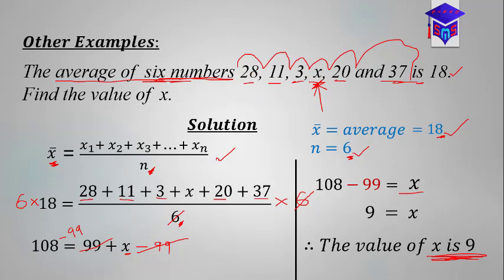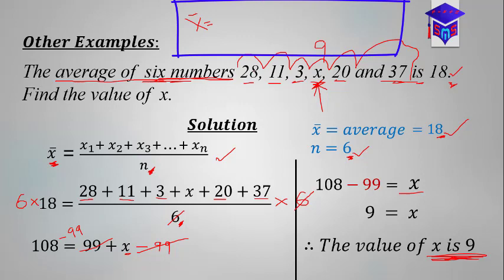To verify: if you substitute 9 back in and use the normal approach to find the mean, you should get 18. X̄ equals 28 plus 11 plus 9 plus 20 plus 37, all divided by 6. This should give us 18 — you can try that and confirm. That is how we approach this kind of question.